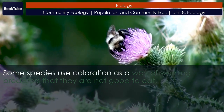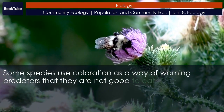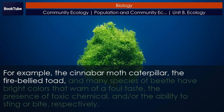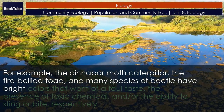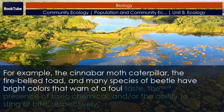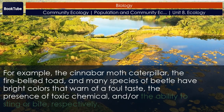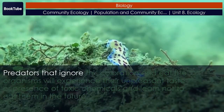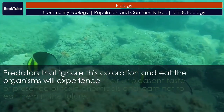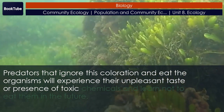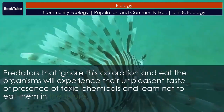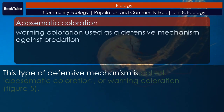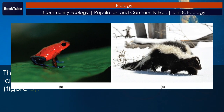Some species use coloration as a way of warning predators that they are not good to eat. For example, the cinnabar moth caterpillar, the fire-bellied toad, and many species of beetle have bright colors that warn of a foul taste, the presence of toxic chemicals, and/or the ability to sting or bite. Predators that ignore this coloration and eat the organisms will experience their unpleasant taste or toxic chemicals and learn not to eat them in the future. This type of defensive mechanism is called aposematic coloration, or warning coloration.